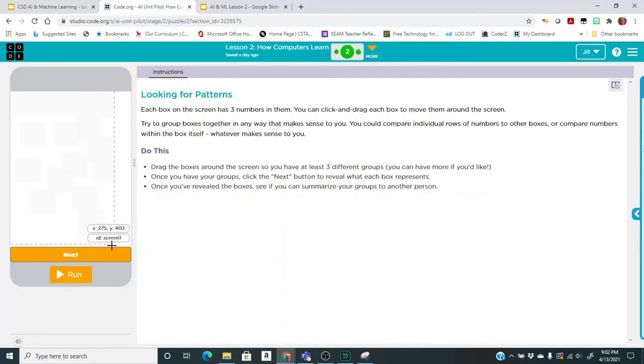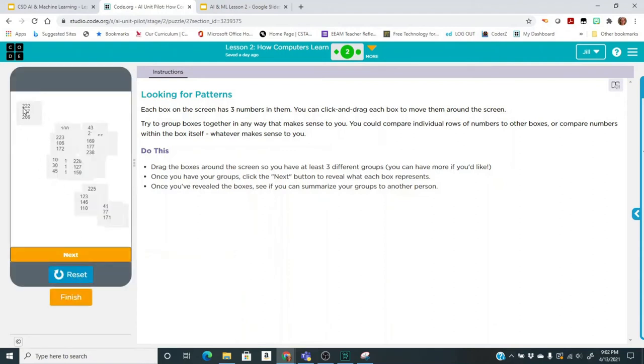Once you've done that, you're going to click Next and it will reveal what those numbers actually represent. So you're going to click Run. You'll see these boxes appear. You can move them around so you can see what all the boxes look like. And then you decide how you might want to group them. And it will be completely up to you, but you need to have at least three groups.